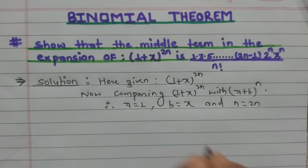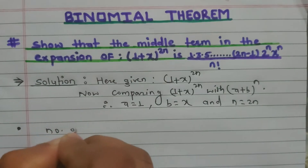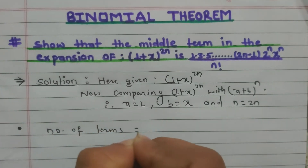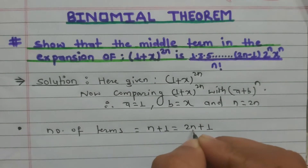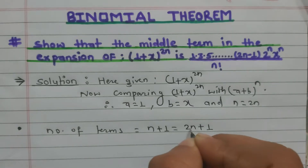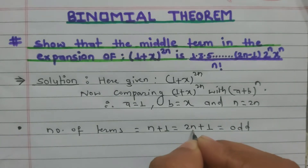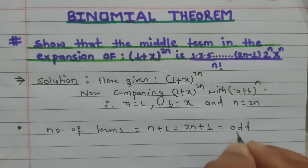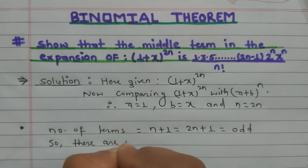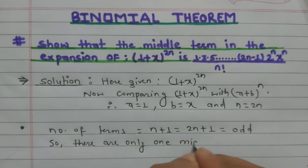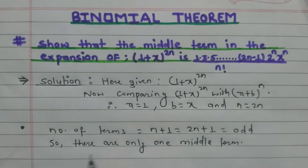For the middle term, we have to find out whether the number of terms is odd or even. The number of terms equals n+1, which here is 2n+1. For example, if n=1, we get 2(1)+1 = 3, which is odd. If n=2, we get 2(2)+1 = 5, which is also odd. So there is only one middle term.